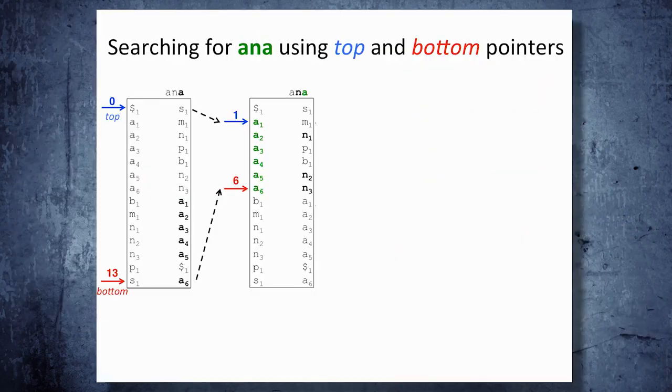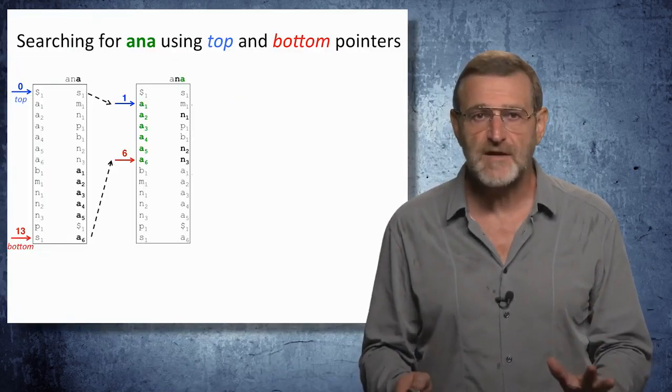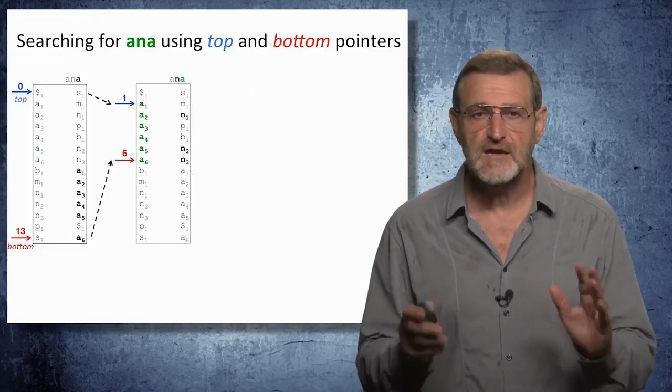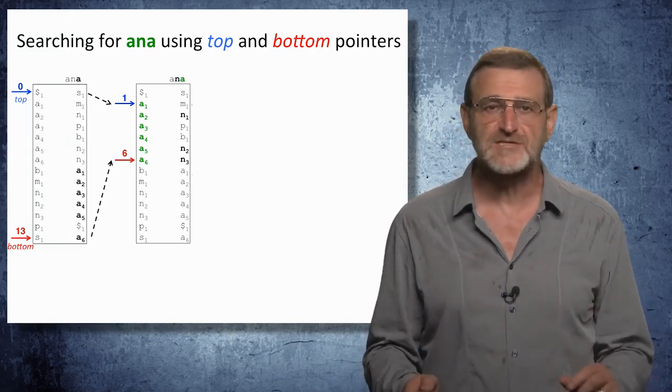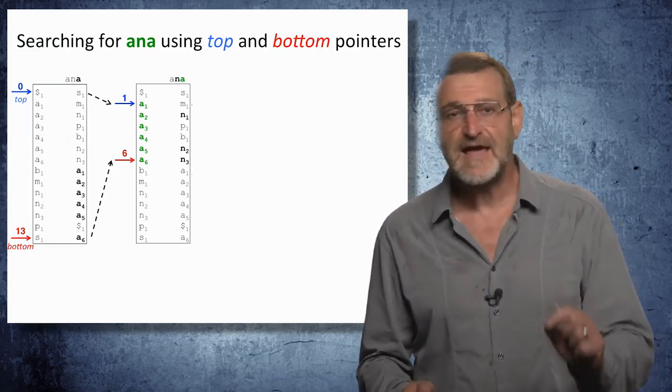Let me specify some details of the algorithm that we just discussed. We will use two pointers, top and bottom, that specify the range of positions in the Burrows-Wheeler matrix that we are interested in. In the beginning, top equals zero, and bottom equals 13 to cover all positions in the text.